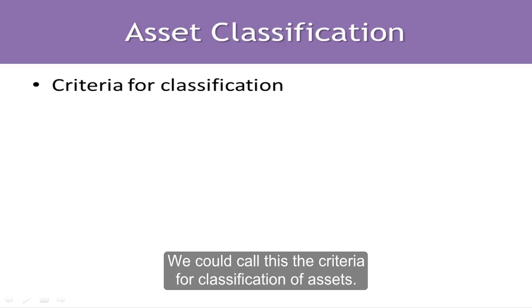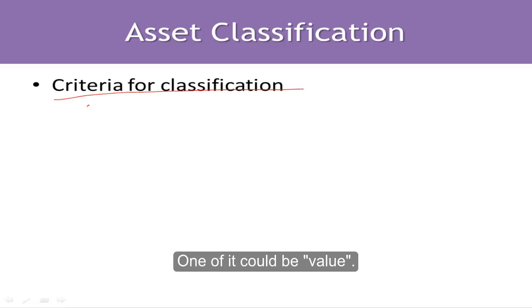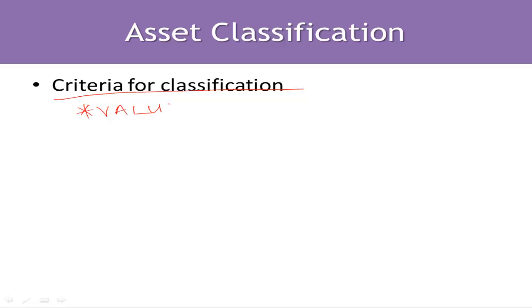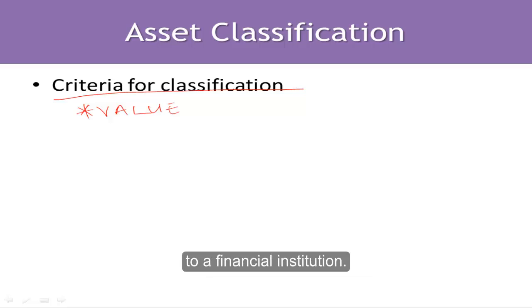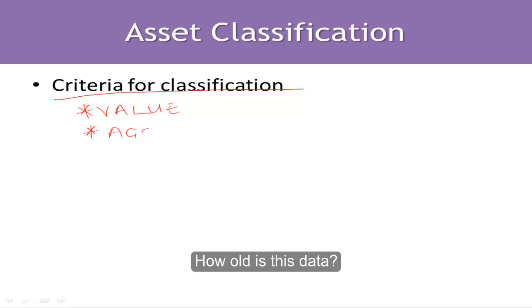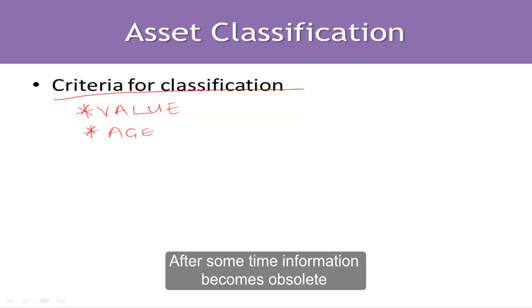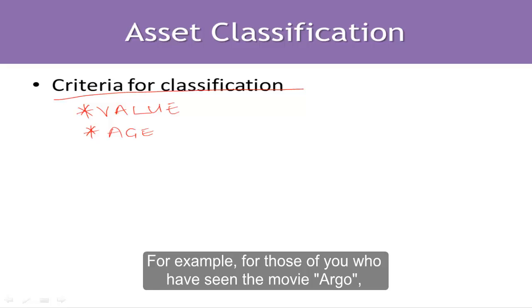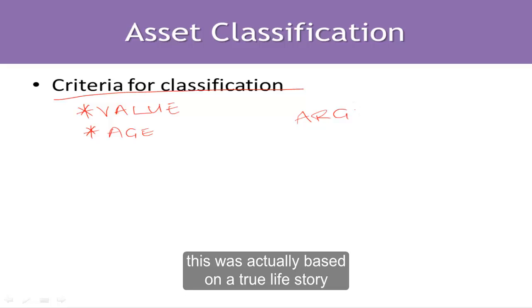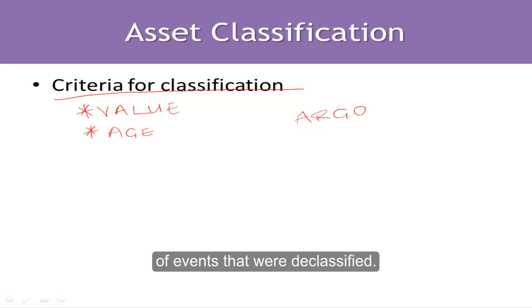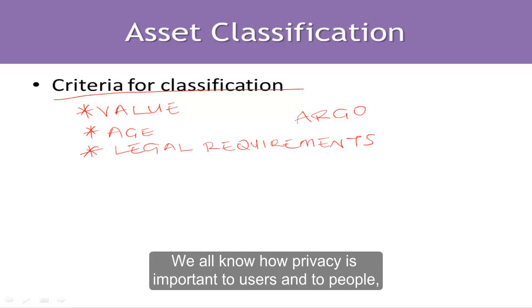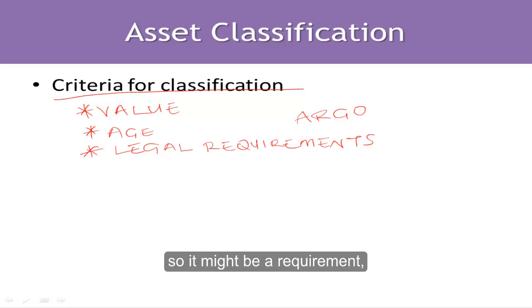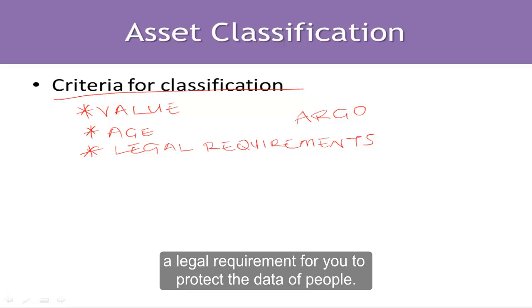We could call these the criteria for classification of assets. One criterion is value — what is the value of this resource to the organization? For example, an account database will be of great value to a financial institution. Another criterion is age — how old is the data? After some time, information becomes obsolete and will not need protection. Another criterion could be legal requirement — privacy is important to users, so it may be a legal requirement for you to protect people's data.